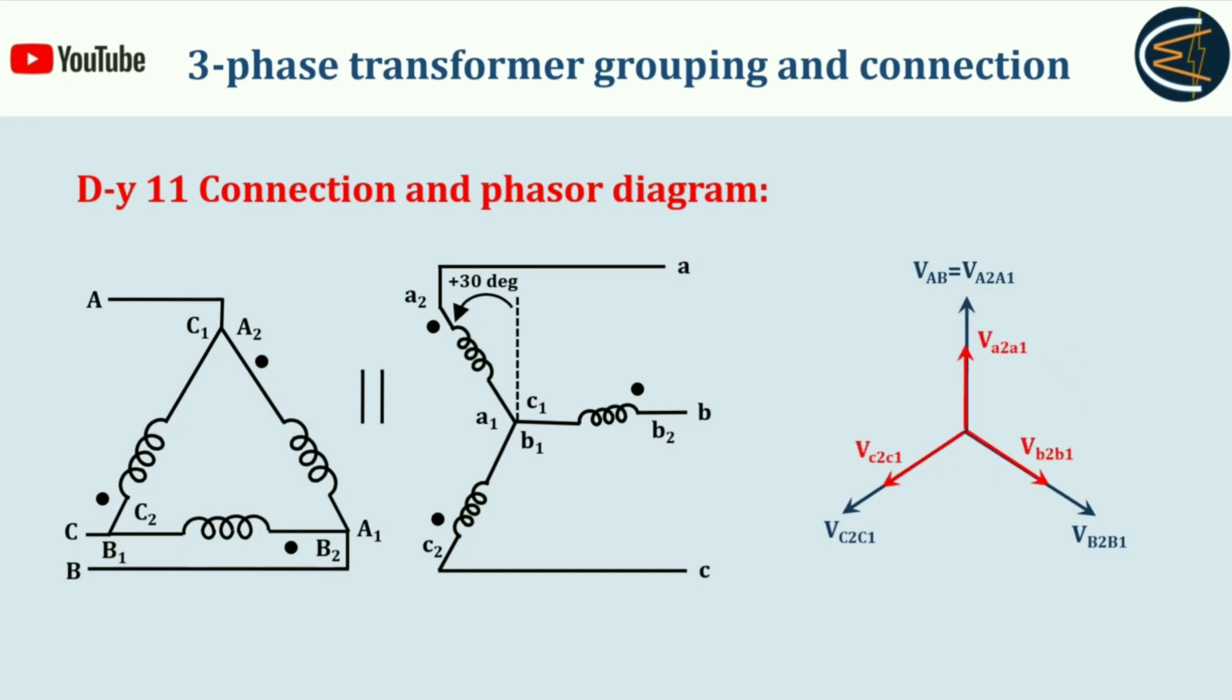Now we need to prove that the corresponding secondary side line voltage is actually leading. These red marked are the secondary side phase voltages: V_A2A1, V_B2B1, and V_C2C1.